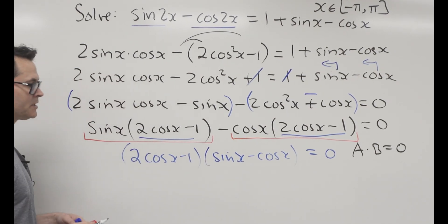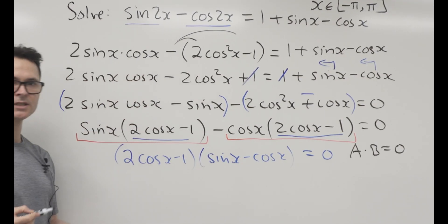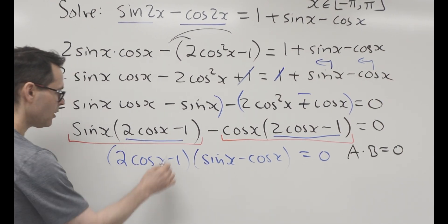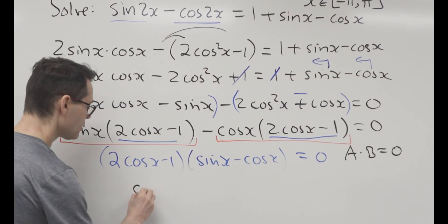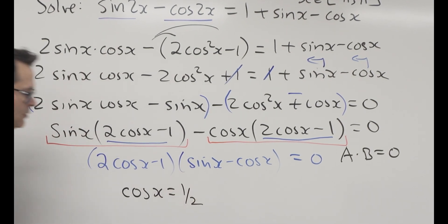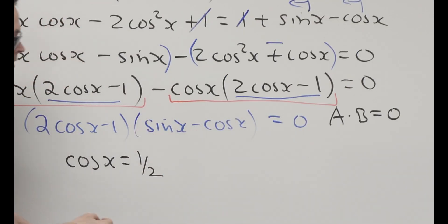Well, what does that mean? That means that this is equal to 0, or this is equal to 0. So what that also means is I can reduce that as cosine x equals 1 over 2, or this is equal to 0, that means that sine x is equal to cosine x.